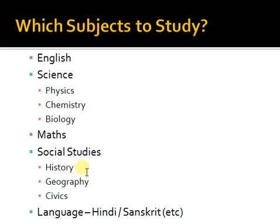For geography, first go for the maps. There are around 10 to 15 maps in geography. Have some extra outline maps and plot each and every map separately. Then take map number 1 and plot the topics from maps 2, 3, 4 — if possible all — on that same map. So it will be good practice and will help you more.